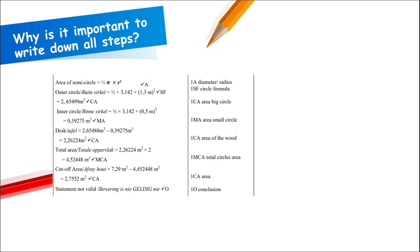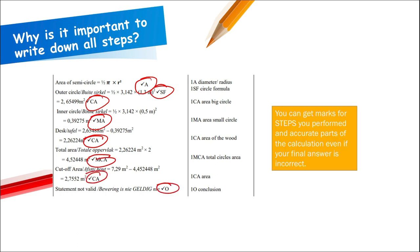It's important to write down all your steps because you get marks for every single step. You can get marks for steps performed and accurate parts of the calculation even if your final answer is not correct — you can still get five out of six or four out of six. Don't just write the final answer; show your steps so the marker can see how you arrived at your answer.